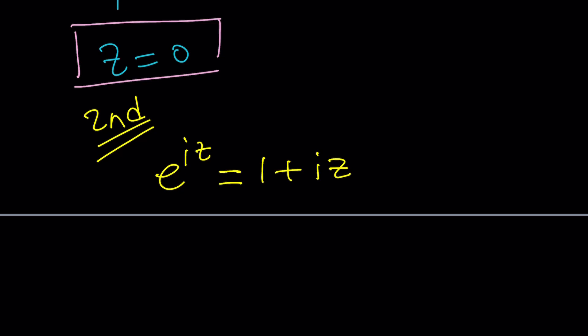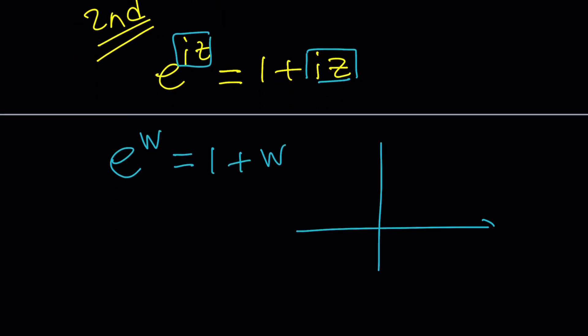Well I do see iz twice so can I just replace it with something like e to the power W equals 1 plus W. And I can kind of think about it as a real number. The graph is going to be the exponential versus 1 plus W which is kind of like a line. This is f of W equals e to the W and then I'm going to graph g of W which is 1 plus W. 1 plus W is a line whose slope is 1. It goes through 0 comma 1.